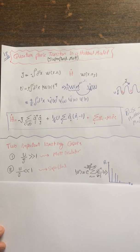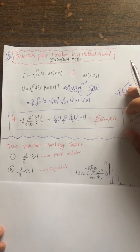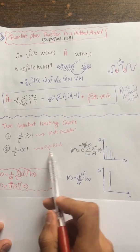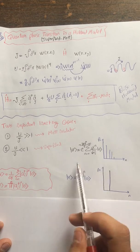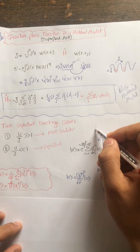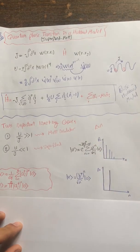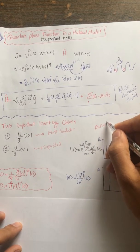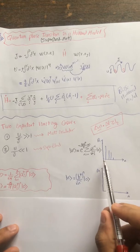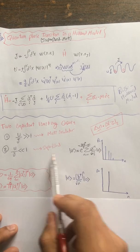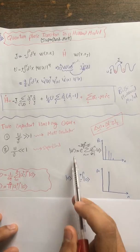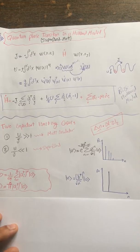To study the Bose-Hubbard Hamiltonian parameters using these ideas: for the superfluid case, the coherence term shows a coherent field. Remember the relation between particle number variance and phase, and the uncertainty relation between phase and number. For the Poissonian distribution of a coherent state — as we write in quantum optics — this is representative of the superfluid case.